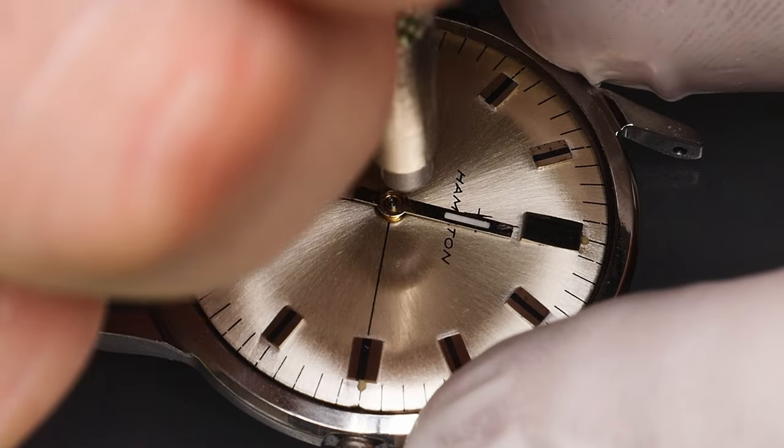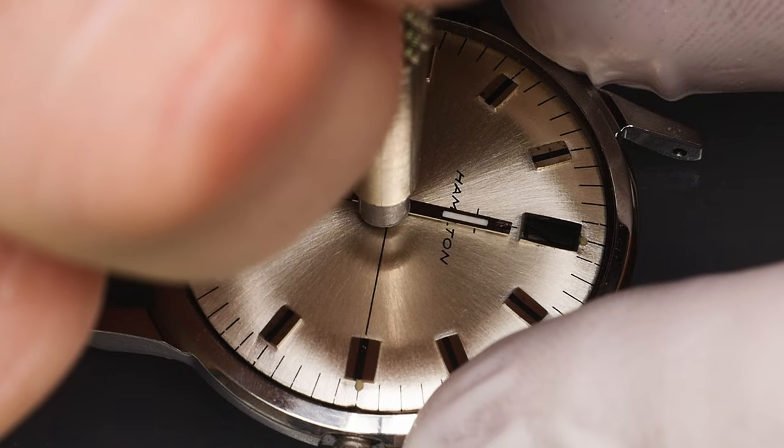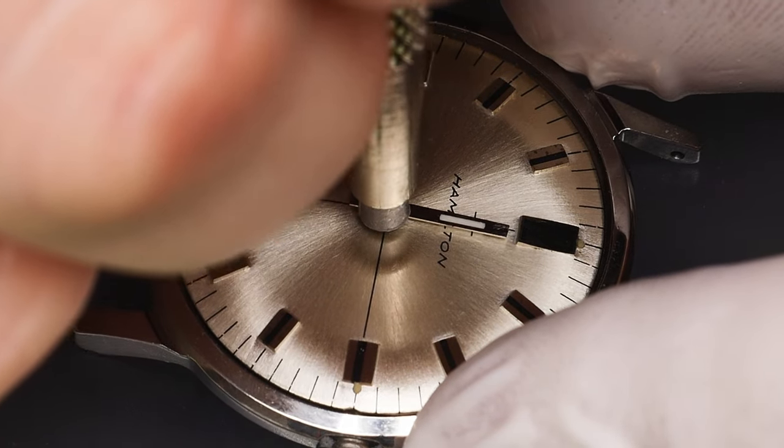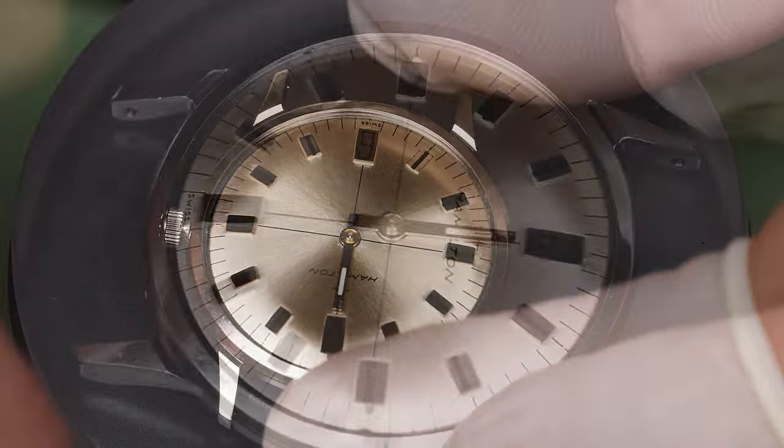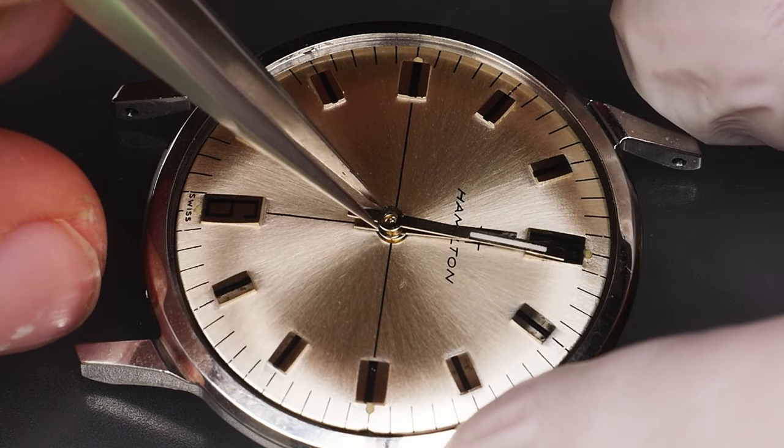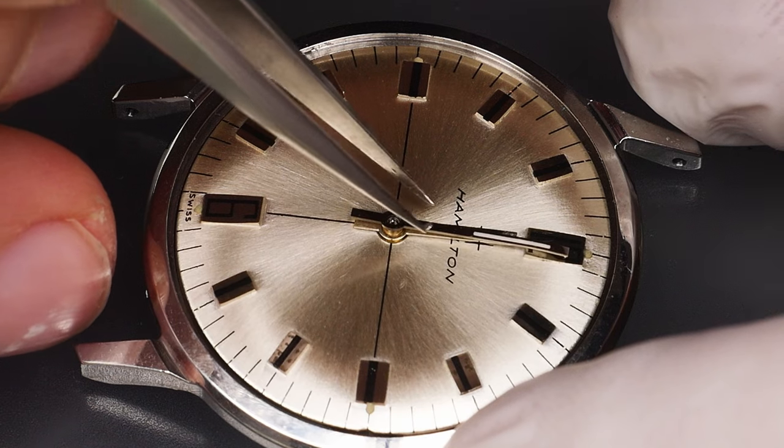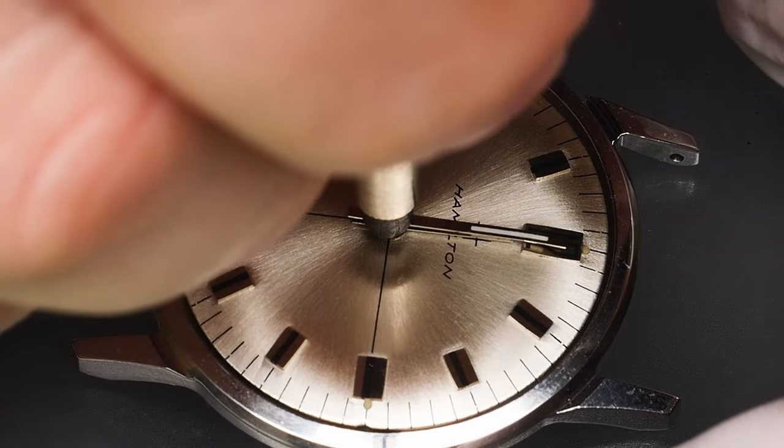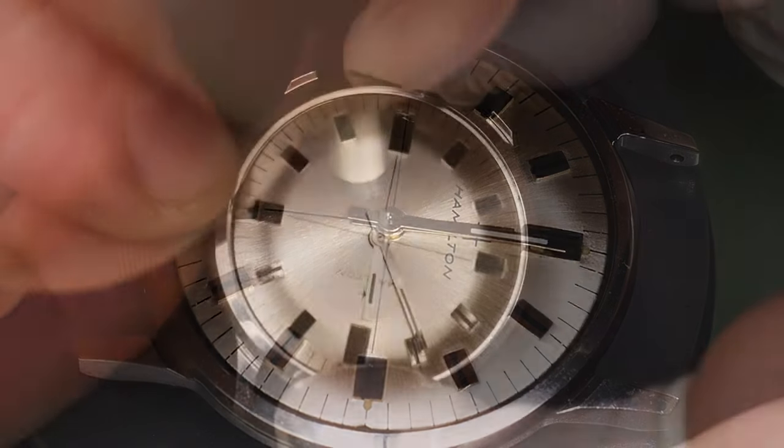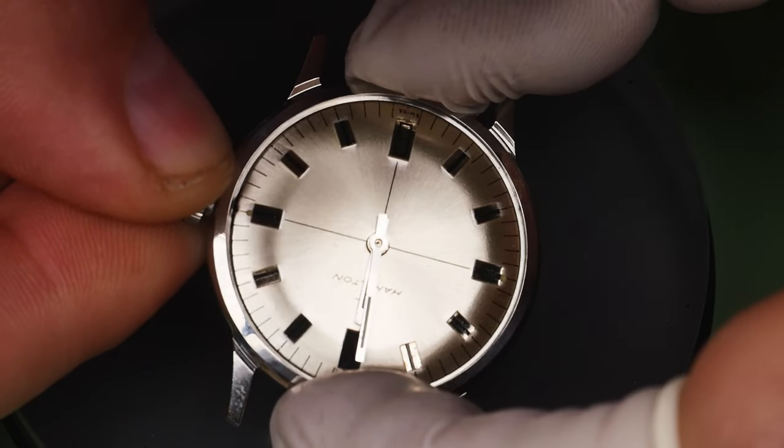Since there is no date complication to worry about, I can throw the hour hand on in any orientation and then line it up with the 12 o'clock marker. I do however have to line the minute hand up exactly with the hour hand. This is easiest if I just align both hands to the 12 o'clock. Both hands are pressed home with a handheld hand press. That's three hands in one sentence. Nice.